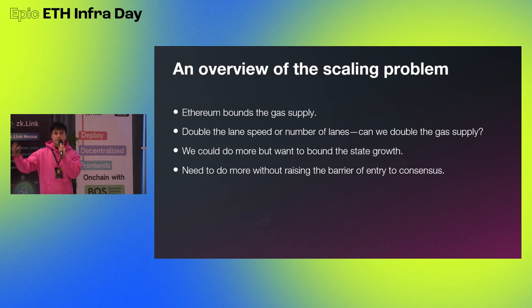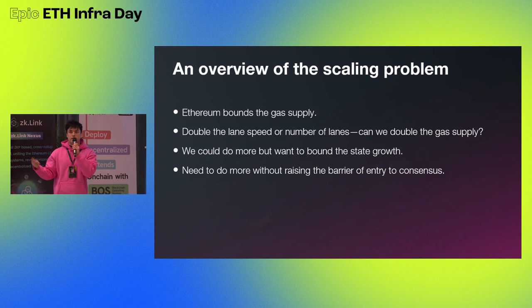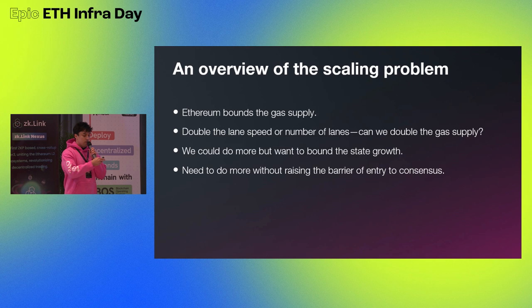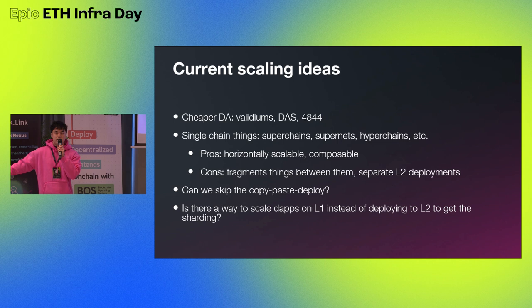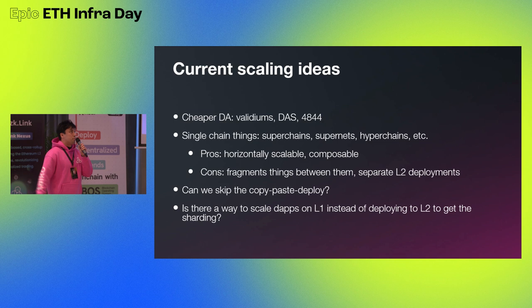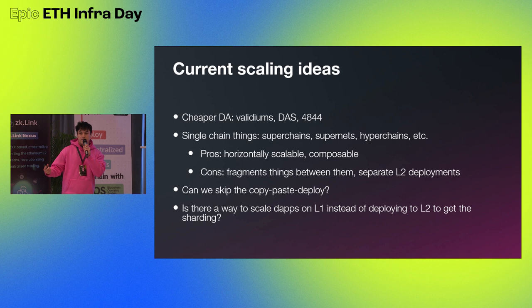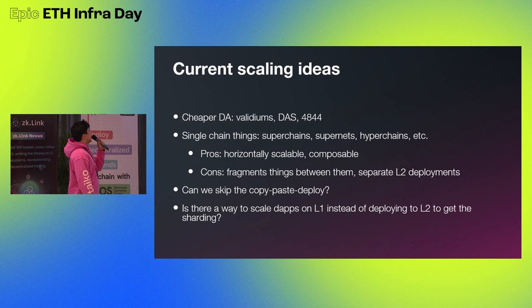The real reason we have a scaling problem is because we have a state growth problem. We want to limit the amount of gas used in the network every 12 seconds so the state doesn't blow up really fast. We do that because we don't want it to become too difficult for people to run nodes and participate in consensus. That's the general scaling problem, and that's why we decided on a rollup-centric roadmap — using the layer one as a data availability layer for execution that happens on L2s.